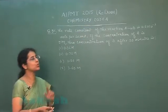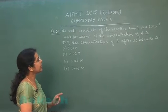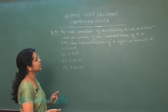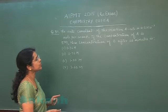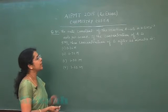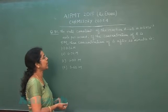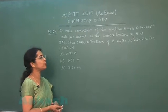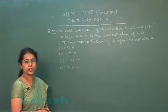So next question is question number 35. The rate constant of the reaction A to B is 0.6 into 10 raise to power minus 3 mole per second. If the concentration of A is 5 M, then concentration of B after 20 minutes is.